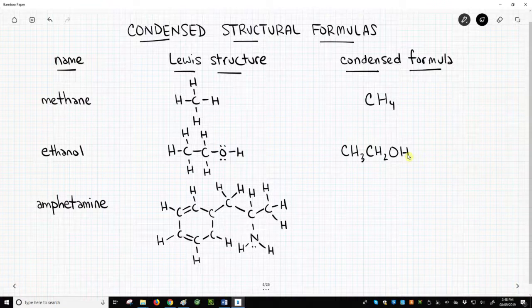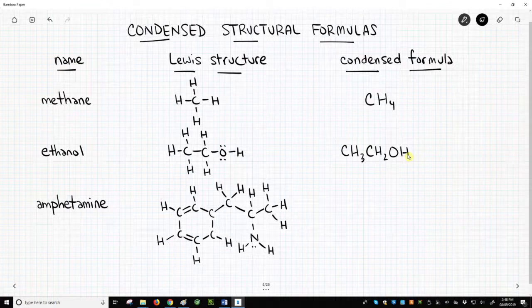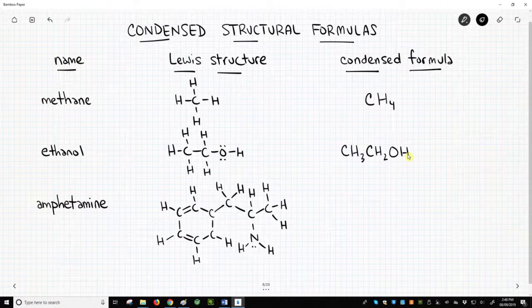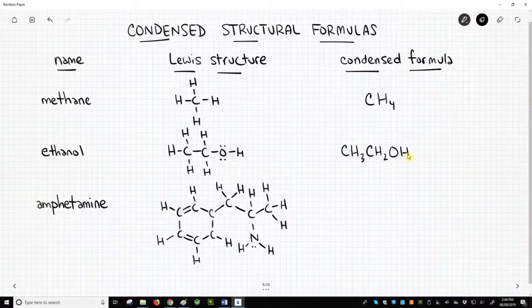The condensed structural formula for amphetamine is kind of tricky. Condensed formulas are written as a line of text. That's fine if your molecule is a linear chain of atoms. Amphetamine is not a line. It has a ring, and it has branching. We can handle the branch, but we need to use a shortcut for the ring.